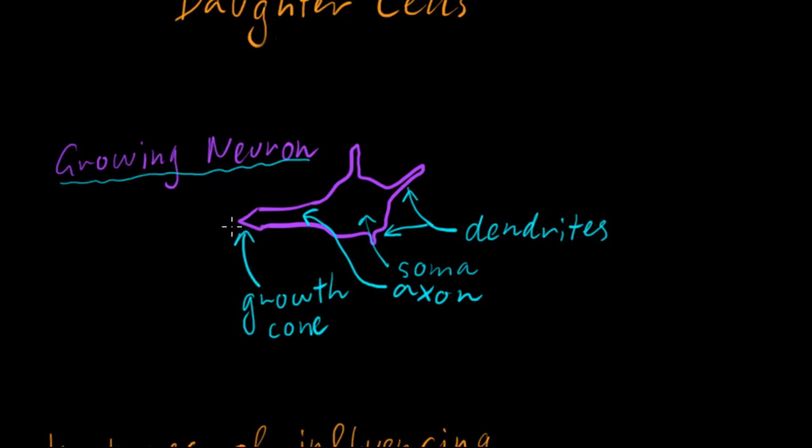This is not necessarily what it looks like in reality, just to give you a visual. The growth cone is this enlargement at the front of the growing axon, and it helps guide or direct the growing axon.